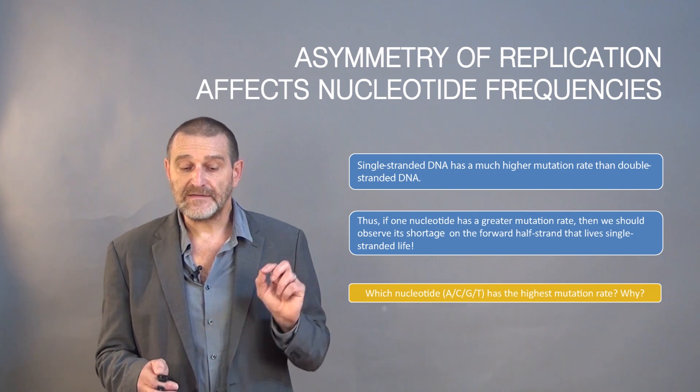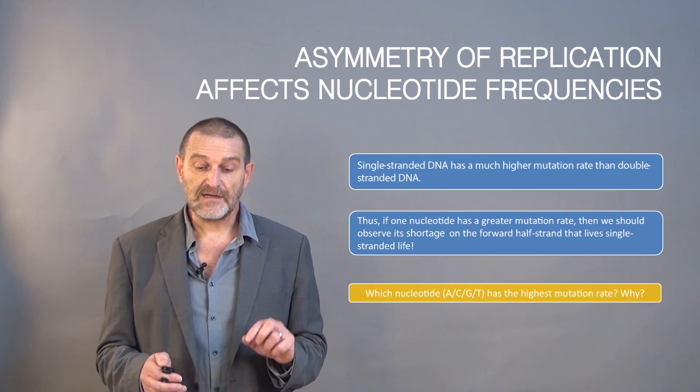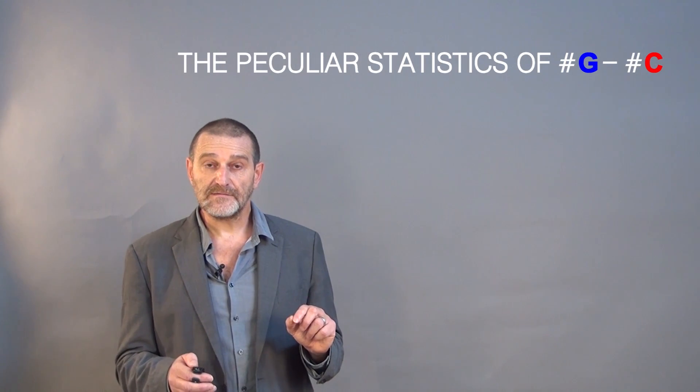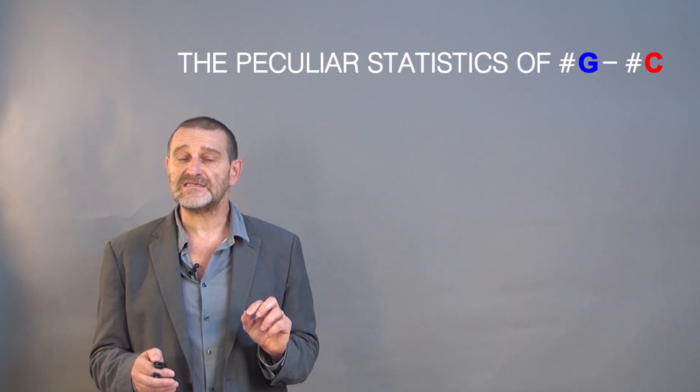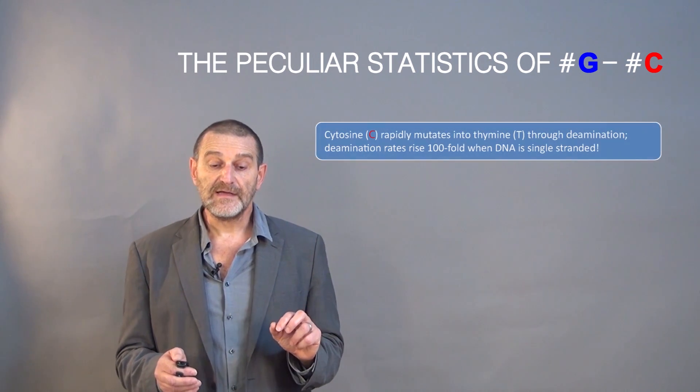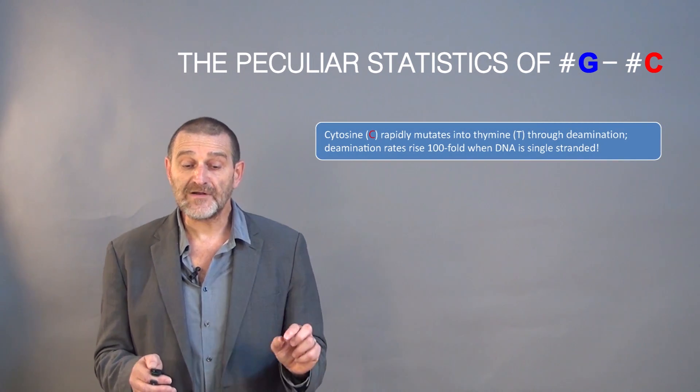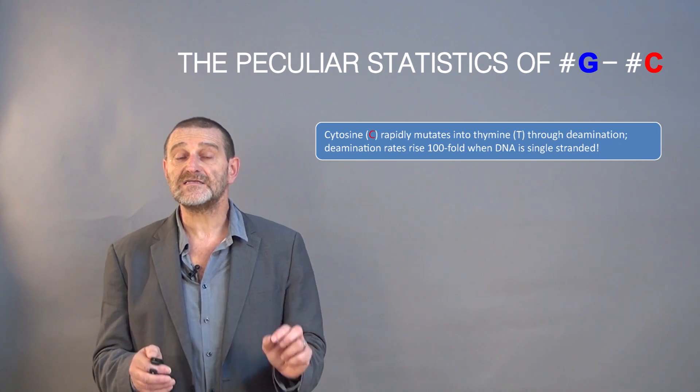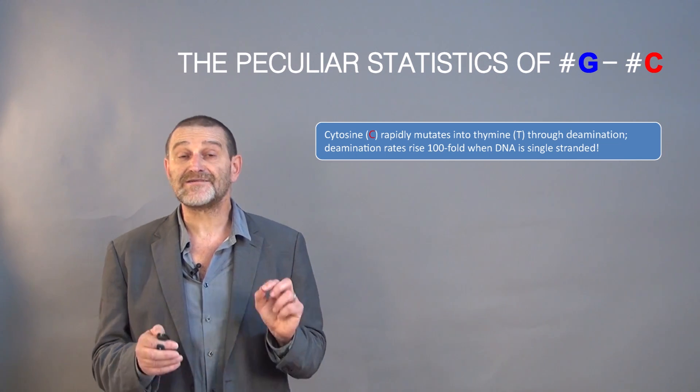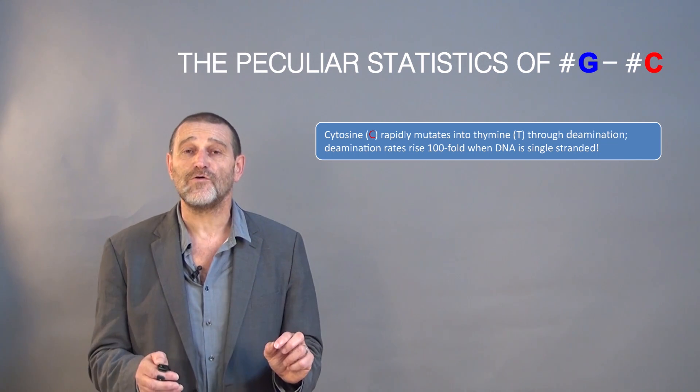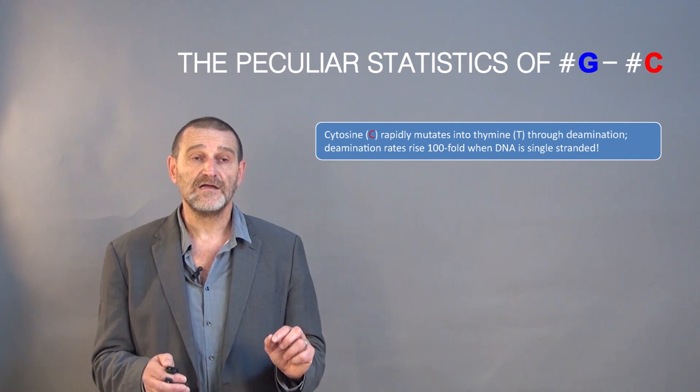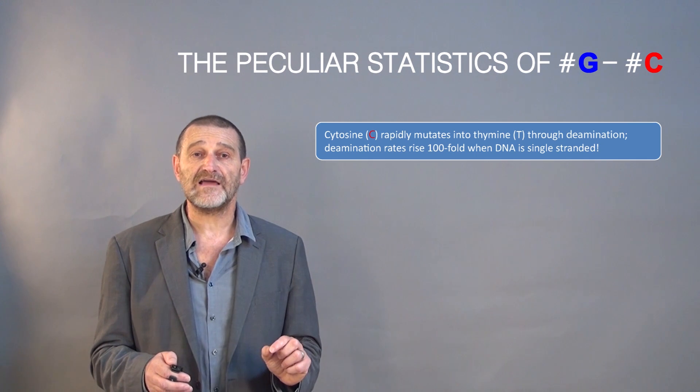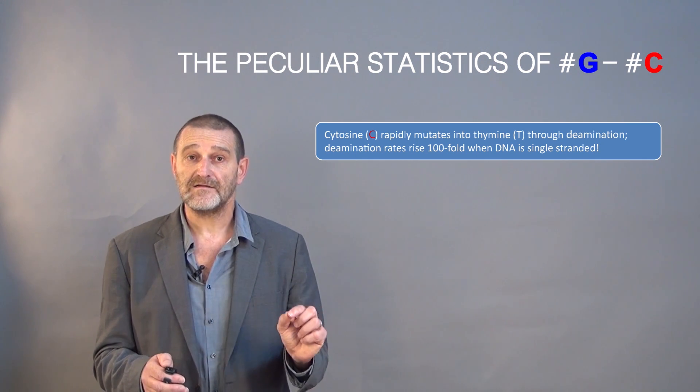Which nucleotide, A, T, C, or G has the higher mutation rate and why? It turns out that there is a peculiar statistics of mutation rates of nucleotides and cytosine, C, rapidly mutates into T. What is quite amazing is that through this deamination process, the rate of mutation rises hundredfold when DNA is single-stranded. The strands that live single-stranded life very quickly get depleted from C.